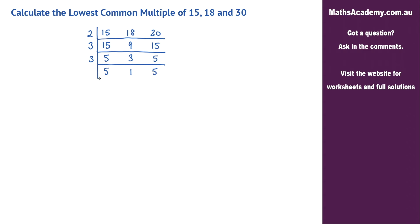The last factor is 5. 5 goes into 5 once. Won't go into 1, so we'll just put the 1 there. 5 goes into 5 once. And once we've got three ones, we can finish.